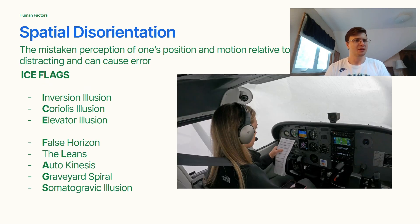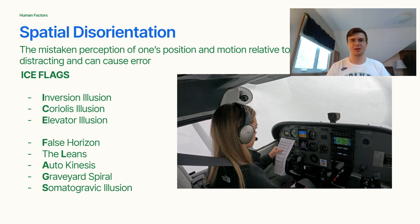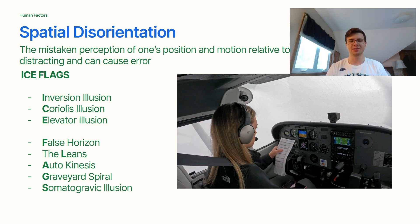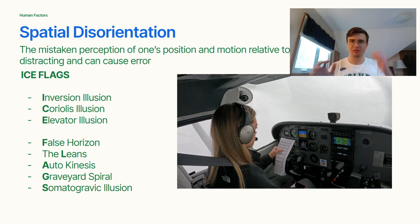Spatial disorientation is the mistaken perception of one's position and motion relative to the Earth. As a VFR pilot you hopefully won't experience it, but as an instructor I like to give students experience flying into actual IMC conditions so they can feel spatial disorientation firsthand. There are eight spatial disorientation illusions, remembered with the term ICE FLAGS: inversion illusion, Coriolis illusion, elevator illusion, false horizon, the leans, autokinesis, graveyard spiral, and somatogravic illusion. The treatment is to follow your instruments — they will tell you if you're level, in a bank, or descending.